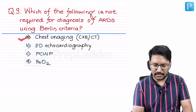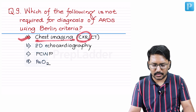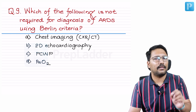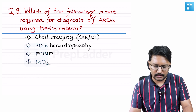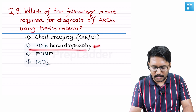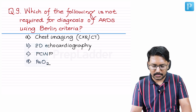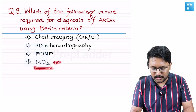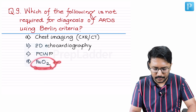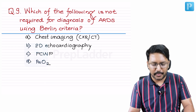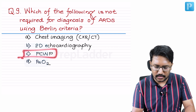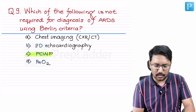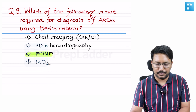We need chest imaging — chest X-ray suffices in most cases, and ultrasound can also be used to visualize B-lines. We need 2D echocardiography to rule out cardiac dysfunction. We need PaO2, the partial pressure of oxygen in arterial blood. PCWP is something that is NOT required in the Berlin criteria. So confidently we can pick option C — PCWP — as the wrong answer.